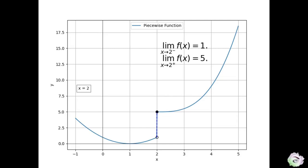However, in this case, the right limit at 2 is 1, and the left limit at 2 is 5. Since they are different, the two-sided limit is undefined.